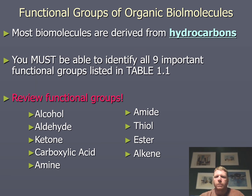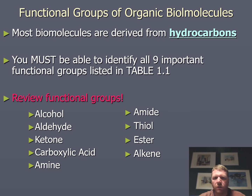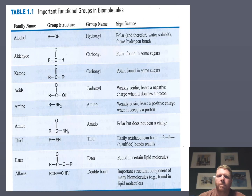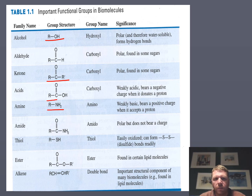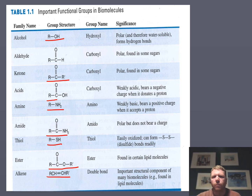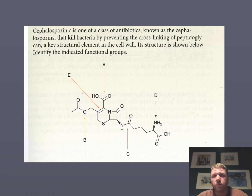Now, the functional groups most important for you to know are: alcohols, aldehydes, ketones, carboxylic acids, amines, amides, thiols, esters, and alkenes. An alcohol is R-OH; an aldehyde is R-CHO; a ketone is R-CO-R'; a carboxylic acid, an amine, an amide, a thiol, an ester, and an alkene. We'll talk about each one whenever we actually look at them, but here they all are to jog your memory.